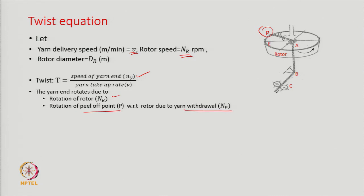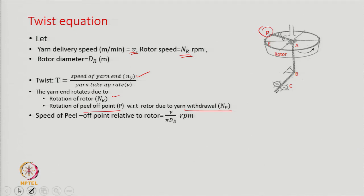Because I am pulling the yarn out, the point P gets an additional rotational motion. P is anyway sitting on the rotor, so whatever the rotor speed, the speed of P will be similar to rotor speed. But since I am pulling the yarn out, it gains an additional rotational speed; therefore, the speed of P is always more than the speed of the rotor.